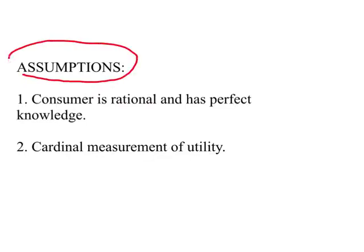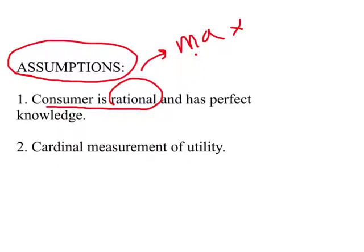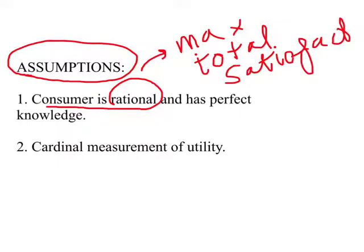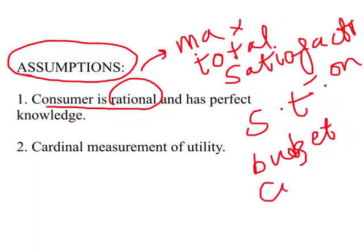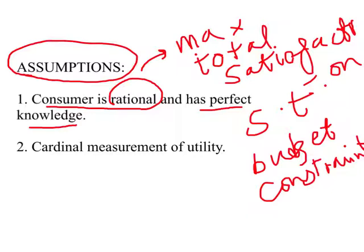So we look at two parts: consumer preferences and budget constraint. Now let us make basic assumptions about the person we are analyzing. We believe this consumer is rational, meaning this person is trying to maximize total satisfaction subject to the budget constraint. The second part of this assumption is perfect knowledge — this person knows all that has to be known about a product, prices, and so on.